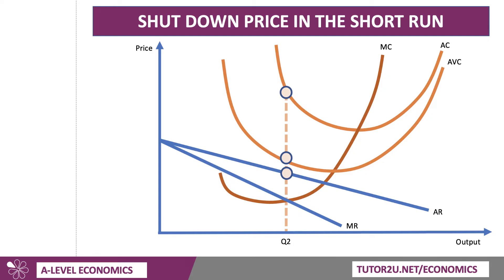Same cost curves as before, but you can see there's been quite a big fall in demand, so average and marginal revenue have shifted down and to the left. The profit-maximising output is now Q2. There's the cost per unit AC2, and the price per unit P2 — so that's a quite hefty loss per unit. There's the variable cost per unit. If they carry on producing, they'll make a loss shown by the yellow area (price minus cost). But if they shut down, they only lose the fixed costs, which is the green area. So in this situation, because the price is below average variable cost, they are below the shutdown point and therefore should shut down production.